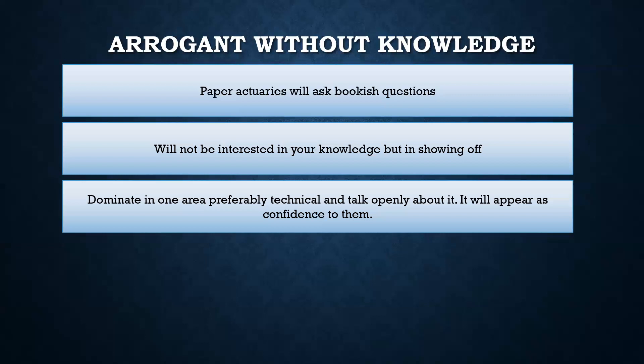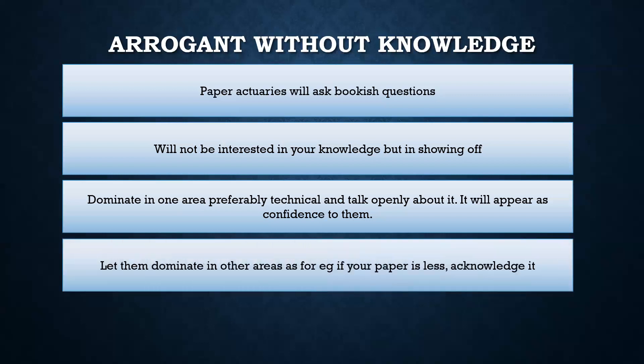This sort of person is looking for their type, and dominating in one technical area gives them the image that you are like them — with a lot of confidence. However, what is important is let them dominate in other areas. For example, if they acknowledge that you have a lot of knowledge in the GMM model of IFRS 17, but point out you haven't cleared papers — because this sort of person would have a lot of papers — you have to acknowledge that and say: 'Yeah, I have not cleared the papers because maybe I was busy in office or there were some family problems, but you are right, I haven't cleared the paper. From this point onwards I'll focus on that as well.' Let them dominate in other areas but pick one technical area and dominate them there.